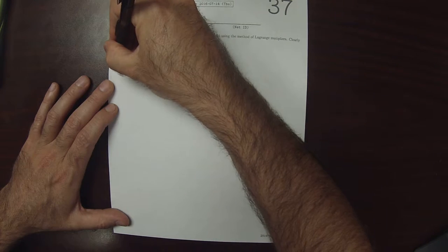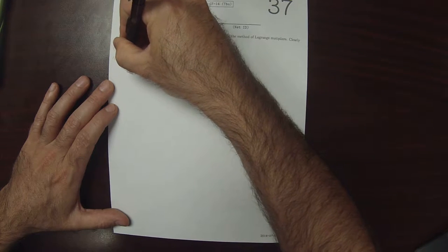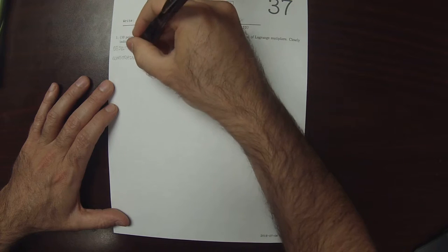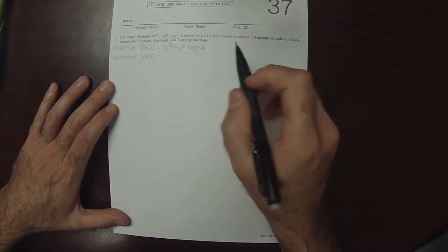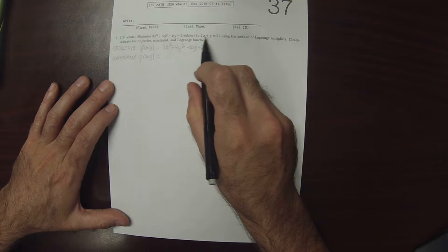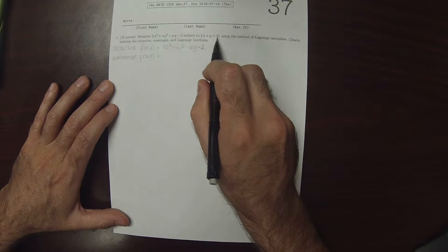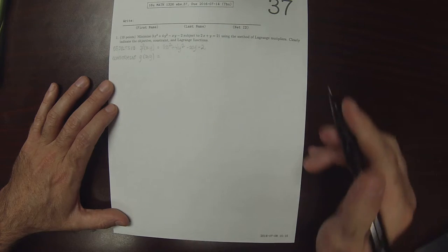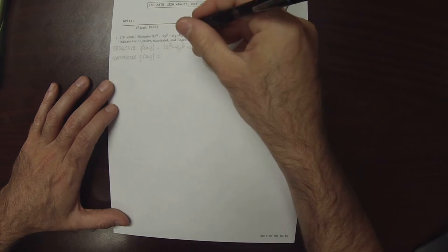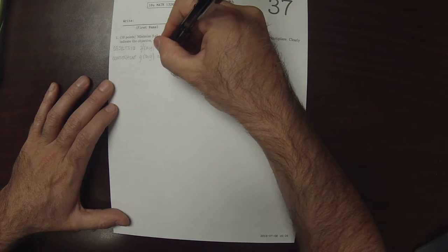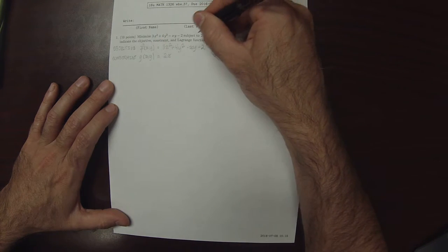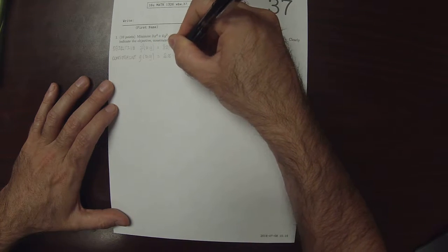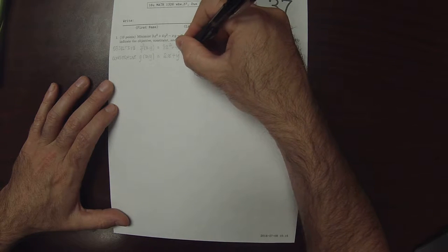The constraint I'll call g of x. So g of x is what you get when you take this constraint and you make one side equal to 0. So that would be 2x plus y minus 21. That's the constraint function.